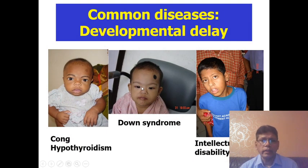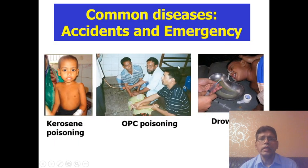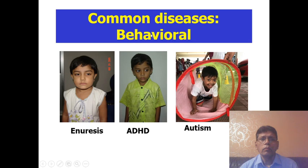Common causes of developmental delay: the most important is congenital hypothyroidism — a child coming with prolonged jaundice, constipation, developmental delay, and coarse appearance. And Down syndrome — the most common chromosomal disease. And intellectual disability. Common accidents and emergencies: most important is kerosene poisoning, then organophosphorus compound poisoning, and drowning. Common behavioral problems: enuresis — bed-wetting — attention deficit hyperactivity disorder (ADHD), and autism.